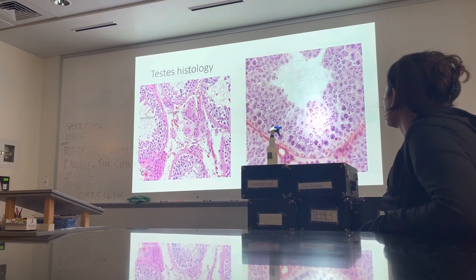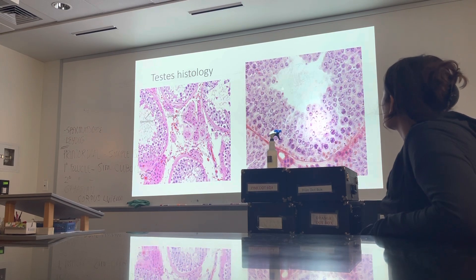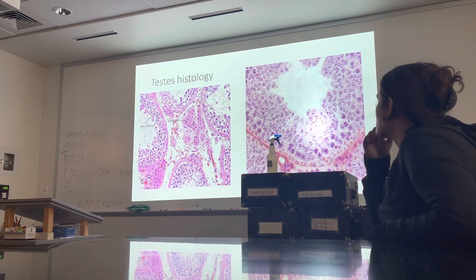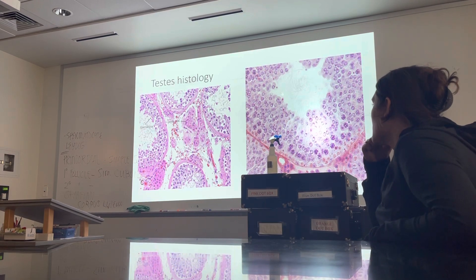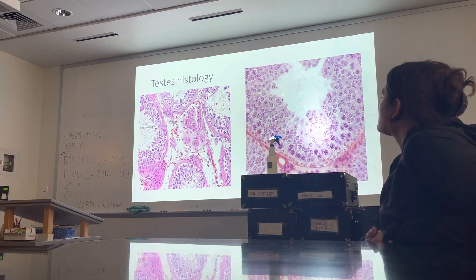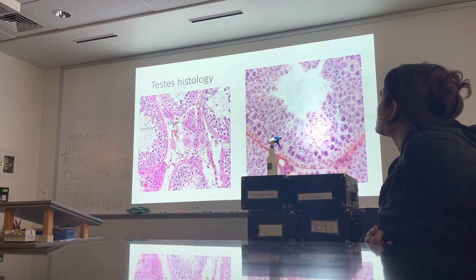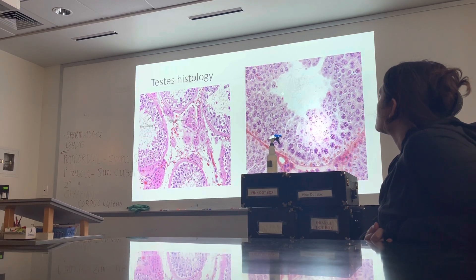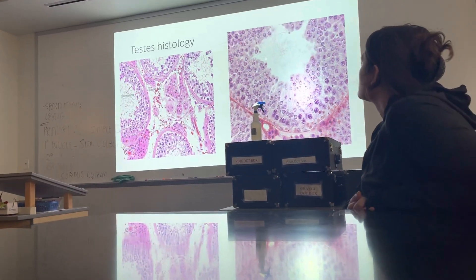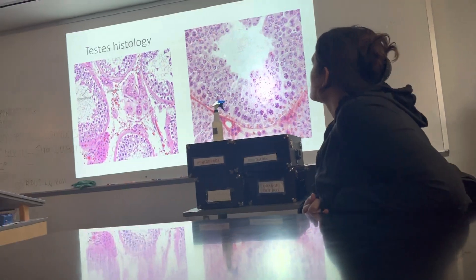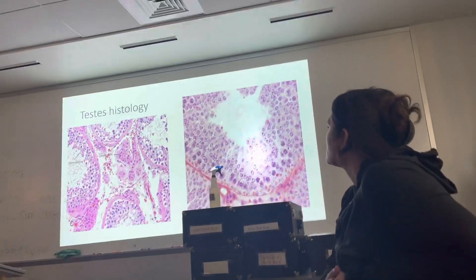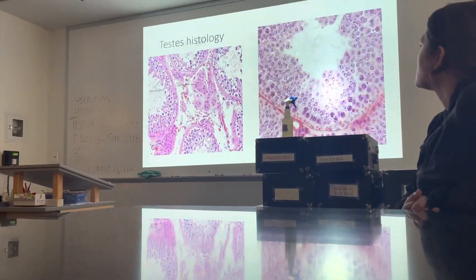I want you to show me the tubule. Use your yellow objective, meaning 100X. And then once you identify it, play around with it — look at it under 40X and also 400X, just so you know. But in the testes, what I want you to point out is the seminiferous tubule.